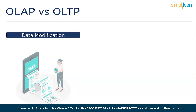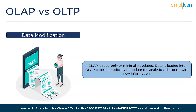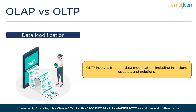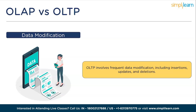The sixth difference is data modification. OLAP is read-only or minimally updated. Data is loaded into OLAP cubes periodically, such as daily or weekly, to update the analytical database with new information. OLTP involves frequent data modification, including insertions, updates, and deletions, ensuring that the transactional database remains up-to-date and reflects the current state of the business.